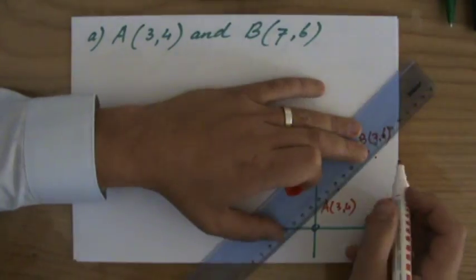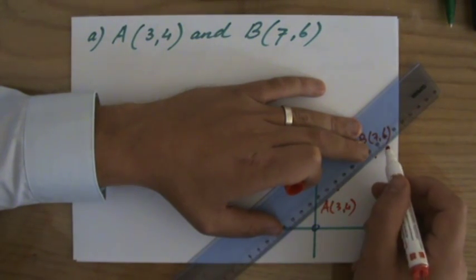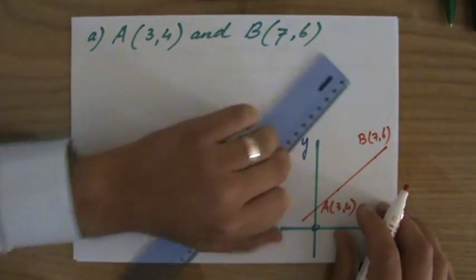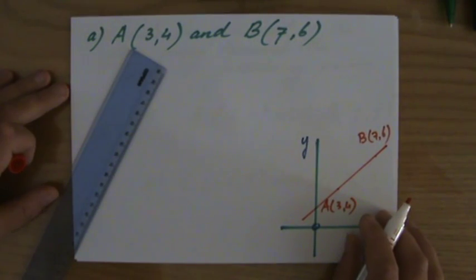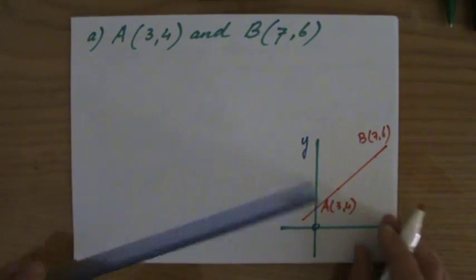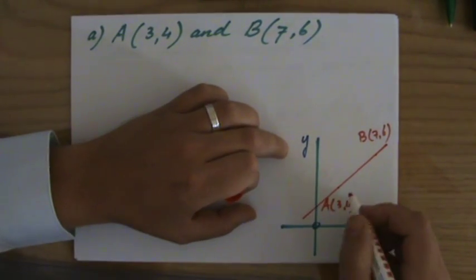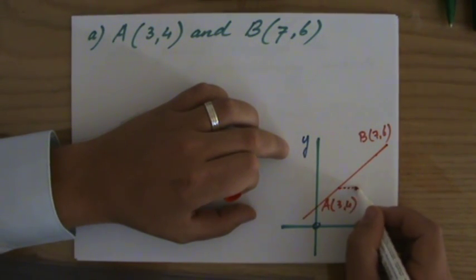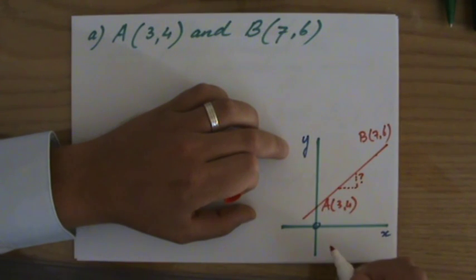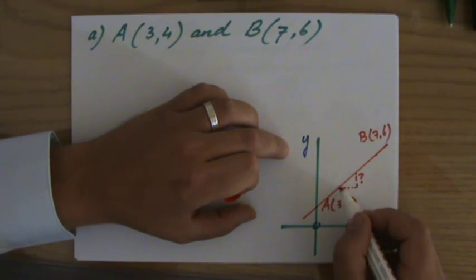This is a sketch because it tells me important information. It tells me I'm looking for a positive gradient. The gradient of a line is the amount of steps you go up if you go one step to the right.